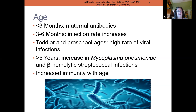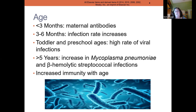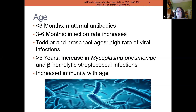Toddlers and preschoolers get lots of viral upper respiratory infections — this is the age of swapping spit. They go to daycare, preschool; everything goes in the mouth, and they spread viral disease. But actually, the child is building up an immune system against that disease, so by the time they reach school age, you're mostly going to see bacterial infections. Upper respiratory infections decrease because as we get immunizations and get these diseases, we build up immunity — so immunity does increase with age.